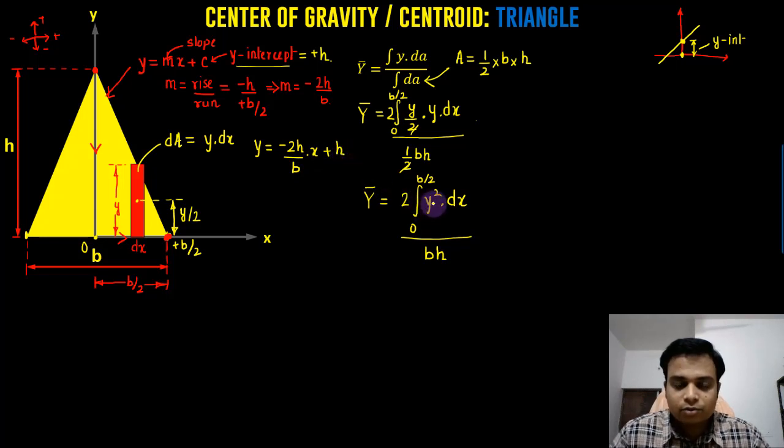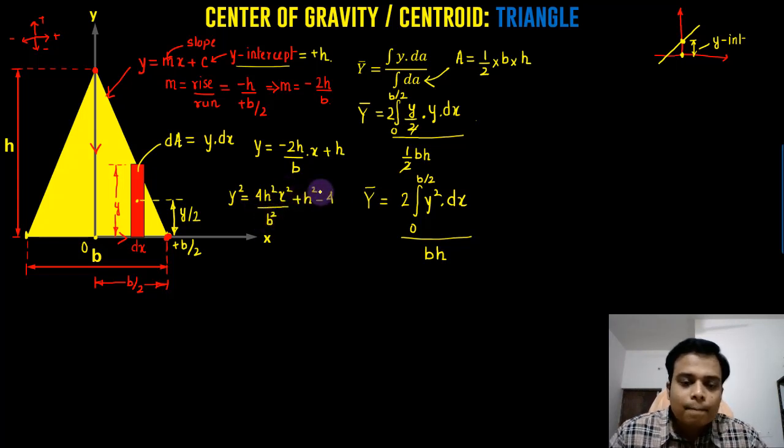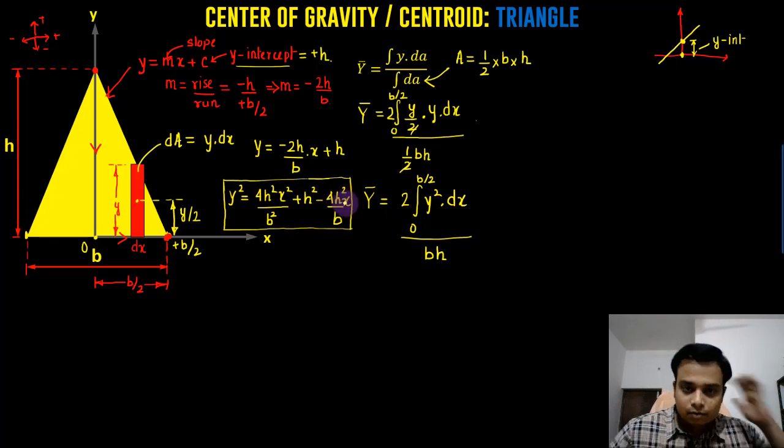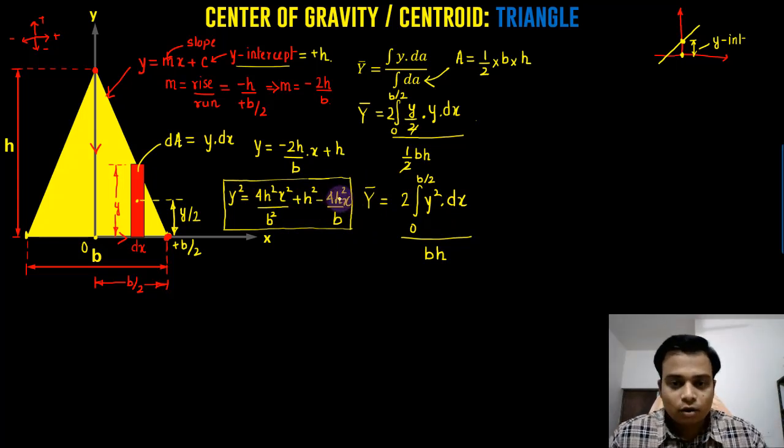What do we need? We need the value of y square. So this has to be squared up. So we can essentially write this as y square is equal to 4h square x square over b square. And I'm going to use this y square over here. And then, all of this will be working out in x. And this is going to be x. So that it can be easily solved.